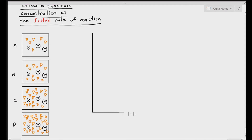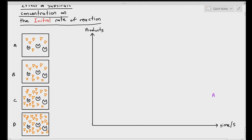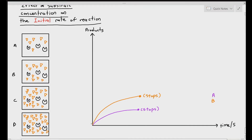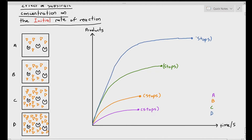I like to ask my students: which experiment will yield the highest amount of products? If we look at the graph of products over time, experiment A will go up and then stop because there is no more ES complex formation. Experiment B will increase even higher and produce more products, because it has more substrates in the beginning. Experiment C will yield even more products, and experiment D will give us the highest concentration of products because it had the highest concentration of substrates.